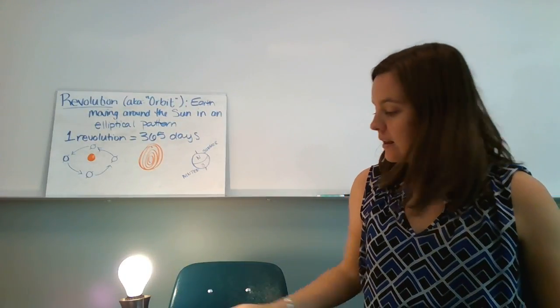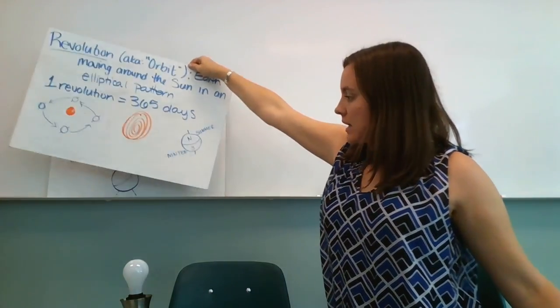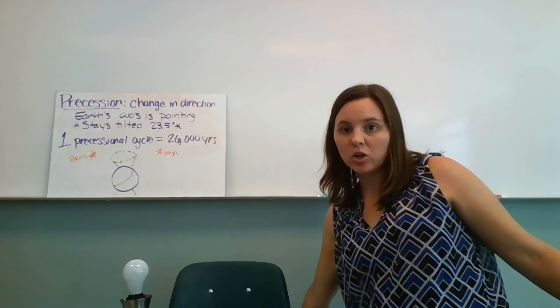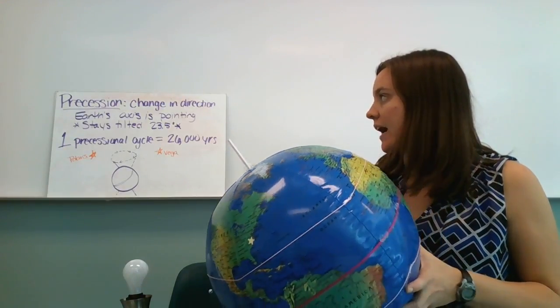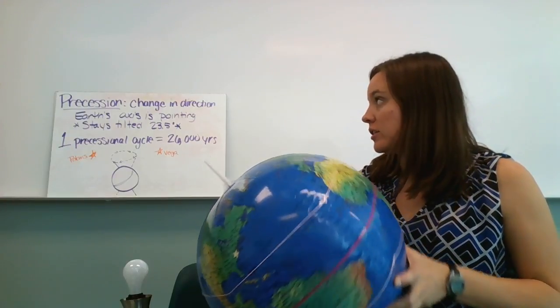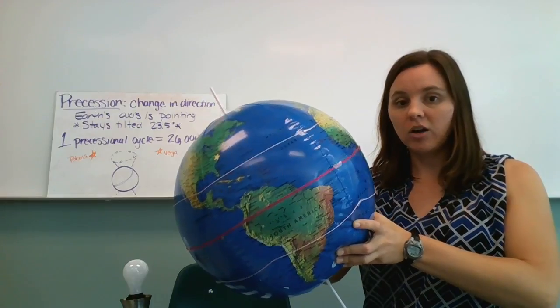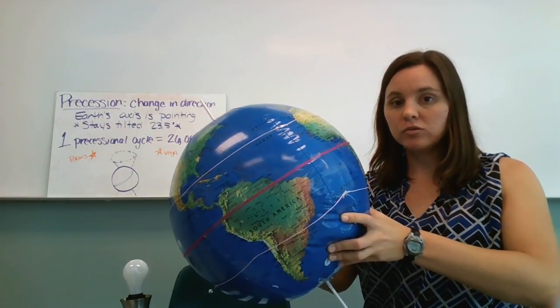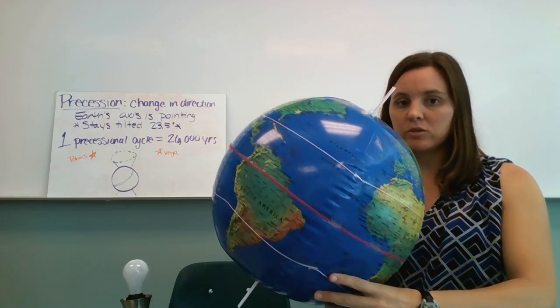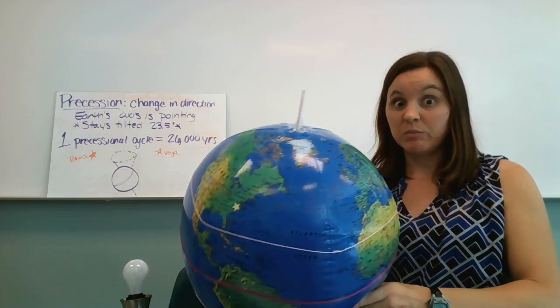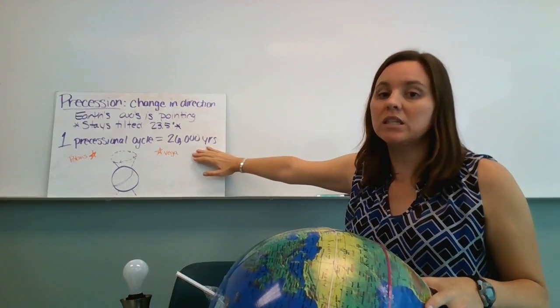And then our third movement is called precession. So this is when there is a change in the earth's axis, in the direction that the earth's axis is pointing. It stays tilted at the 23 and a half degrees off-center, but it will eventually kind of rotate itself around in space. And by eventually, I mean really eventually. One precessional cycle takes 26,000 years.